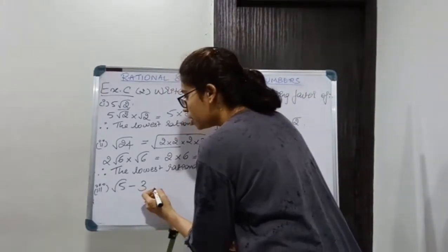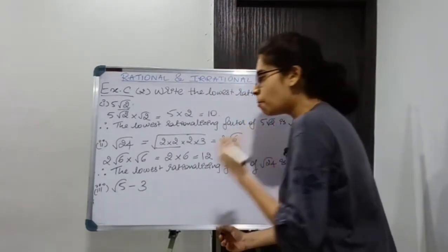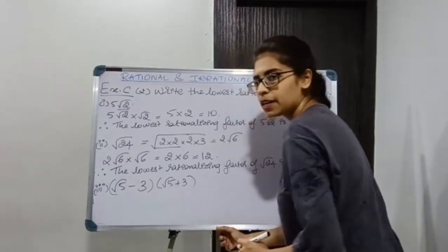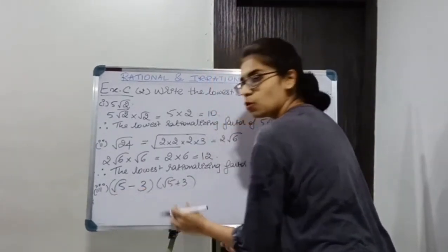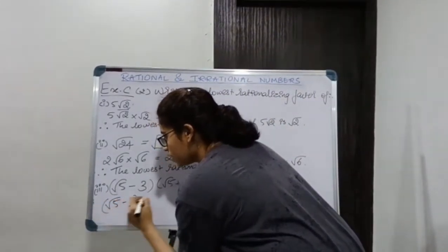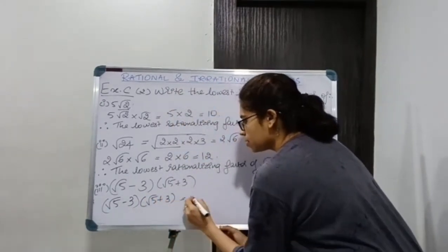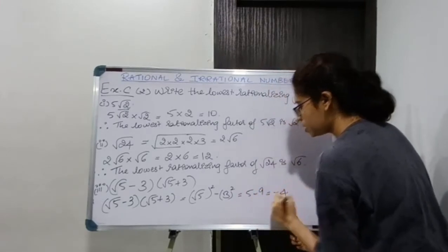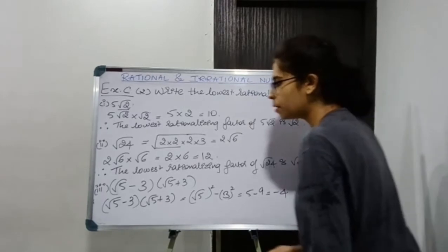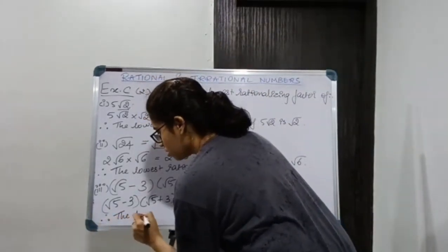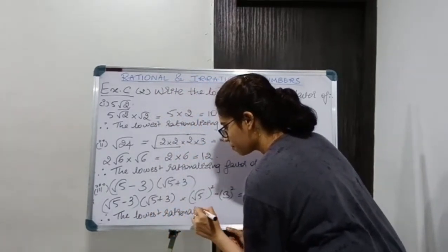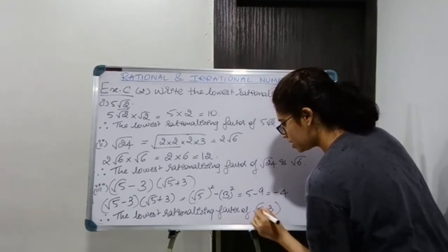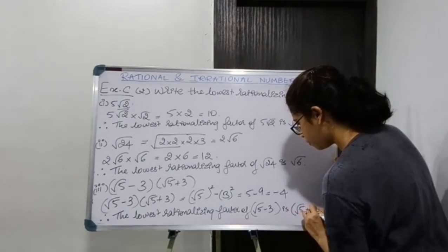Moving on to the third number: √5 - 3. I am going to multiply it by √5 + 3. This is of the form (A - B)(A + B), so (√5 - 3)(√5 + 3) = √5² - 3² = 5 - 9 = -4, which is rational. Therefore the lowest rationalizing factor of √5 - 3 is √5 + 3.